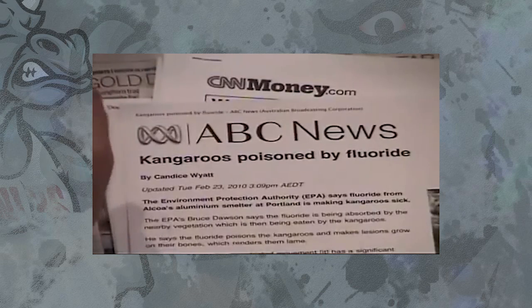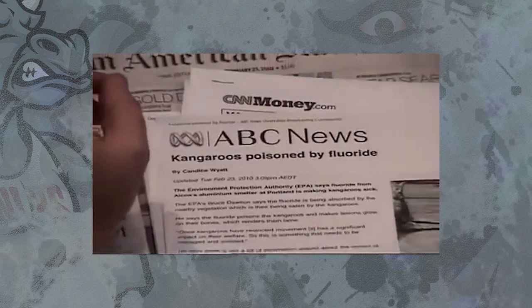Fluoride from Alcoa's aluminum smelter at Portland is making kangaroos sick. Well, why not just put it in the water supply? Oh, that's what you do. It's the byproduct from the purification process of aluminum manufacturing and the byproduct of fertilizer manufacturing, and you just dump it in our water. That and over 150 chemicals on average.